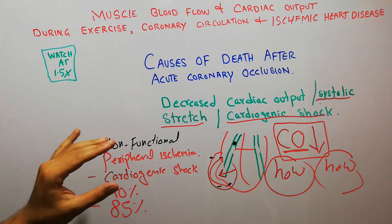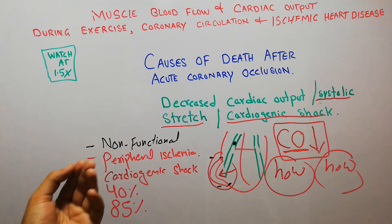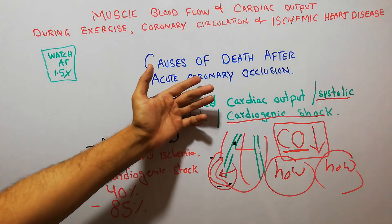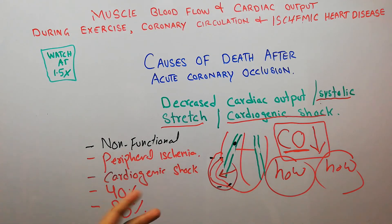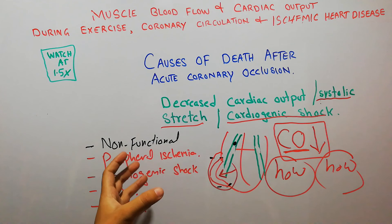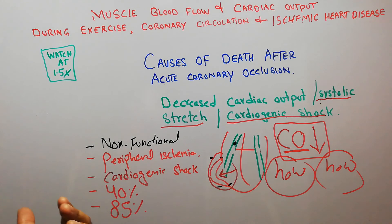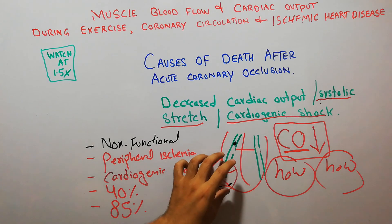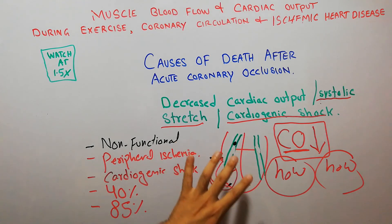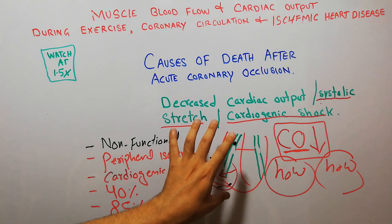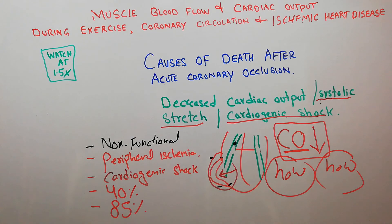There are other causes of death due to acute coronary occlusion as well. These include the damming of blood in the lungs, which leads to respiratory distress, and rupture of the cardiac muscles. We are going to discuss all of them one by one in coming lectures. Thanks for watching.